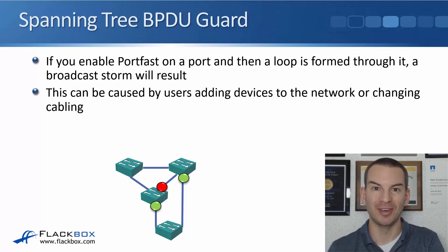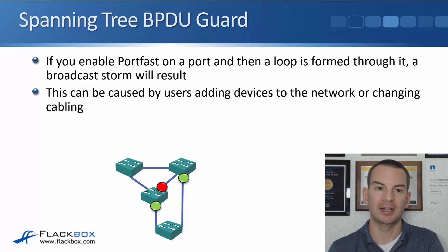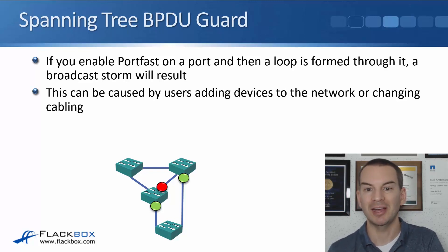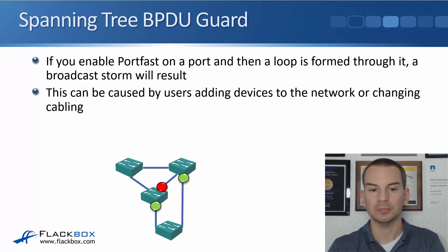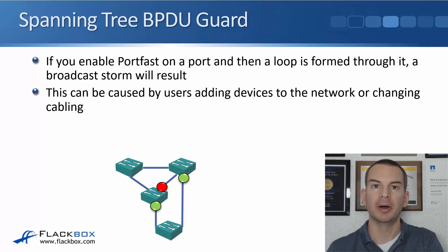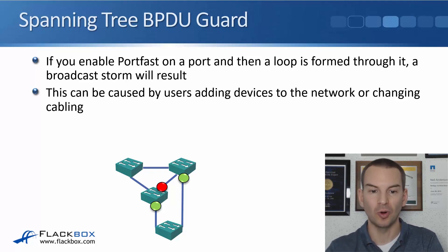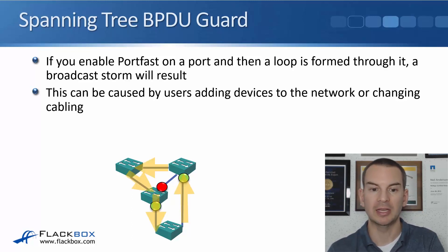There could be a big problem with this: if you enable PortFast on a port you're disabling spanning tree, and if a loop is formed through it you're going to get a broadcast storm. The most common reason is users doing things they shouldn't, like adding devices to the network — additional switches or changing the cabling. As shown in the diagram, the switches are configured with PortFast expecting end hosts, but a user plugged their own switch into two different wall ports to get more ports, forming a loop and causing a broadcast storm.